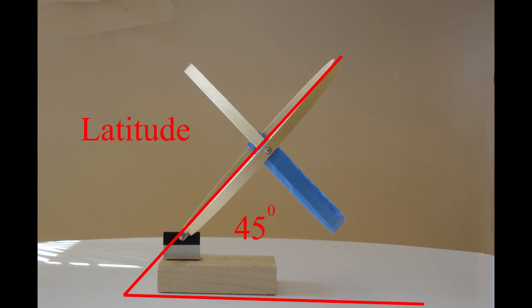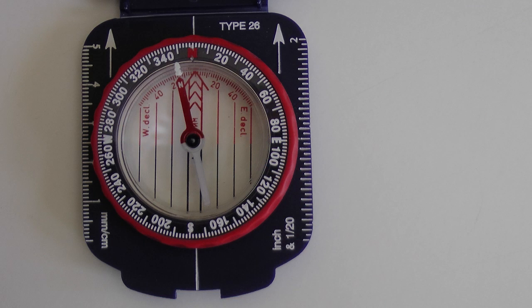Next, the device must be pointed true north. You can do that with a compass. Or in the northern hemisphere, on a clear night, you can point the axes of your dial at Polaris, the north star.